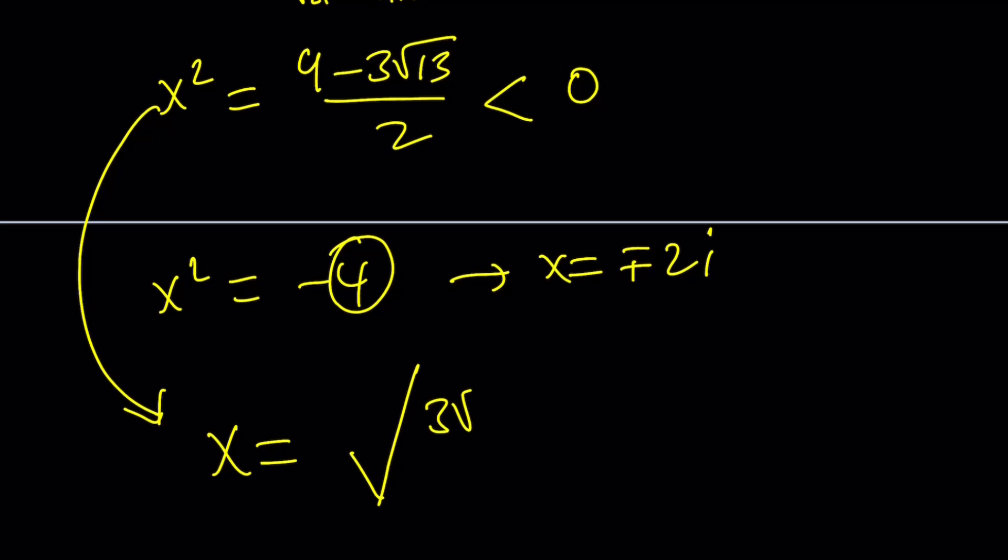So, I can do the following then. From here, x becomes the square root of 3 root 13 minus 9 over 2, which is the opposite of our negative number. This is positive, so this is a real number. Multiplied by i, and do not forget to put the plus minus sign, because there are two numbers whose square equals this number.